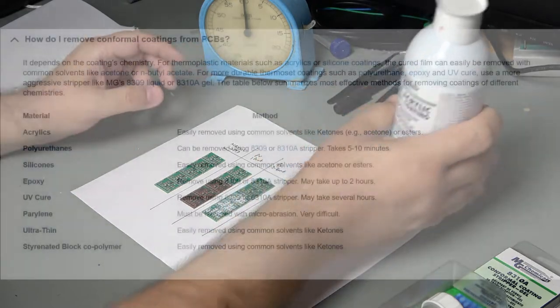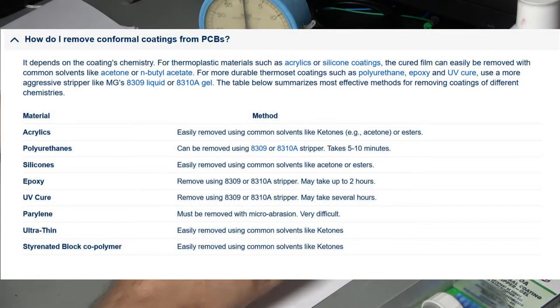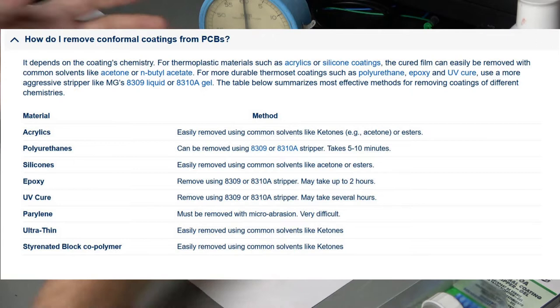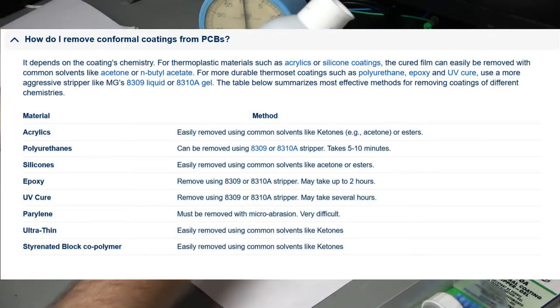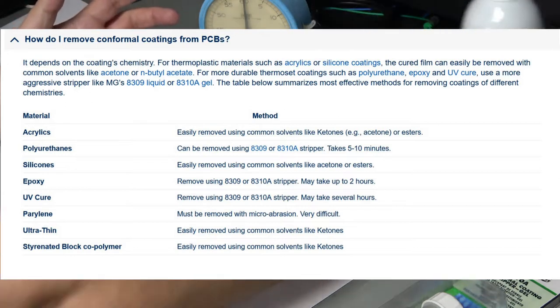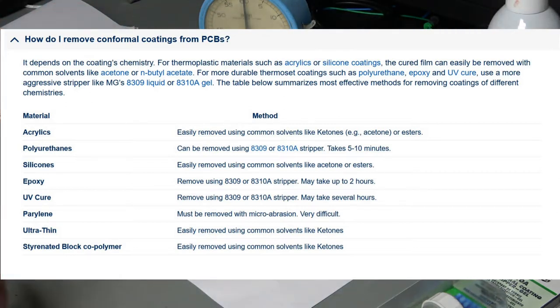Now the actual removal method of course is going to depend on what type the coating is. And here are a few with some comments from MG Chemicals. Sadly I don't have the silicone or the UV cure, but I will test it on a few of the other more common types. So acrylics, polyurethanes, epoxy I will try it on. Parylene I haven't got any of unfortunately and it is very expensive, so hopefully you won't come across that one too often. This solvent apparently can soften it and make it more gel-like and easier to remove.